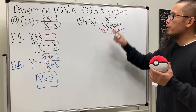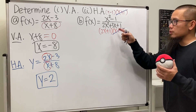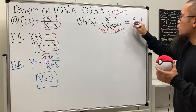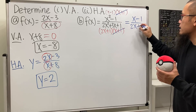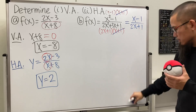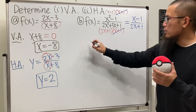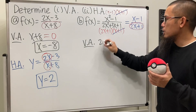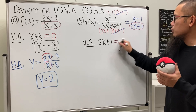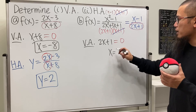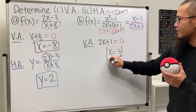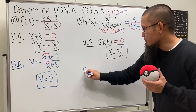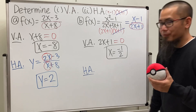After reducing, we're working with (x − 1) / (2x + 1). For the vertical asymptote, set the denominator equal to zero: 2x + 1 = 0, giving x = −1/2. Done.